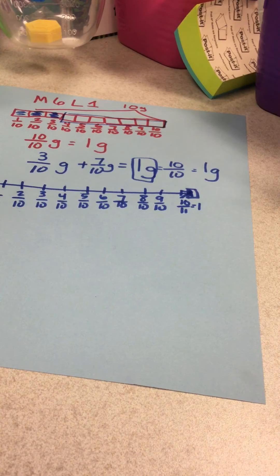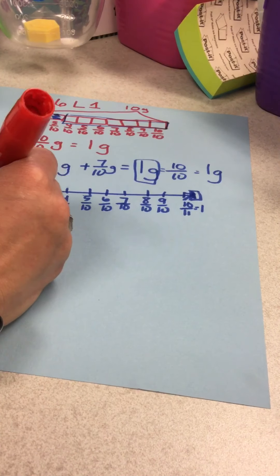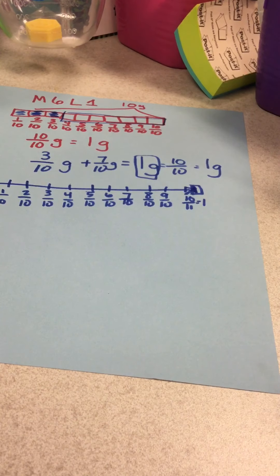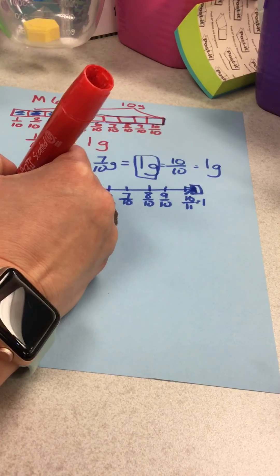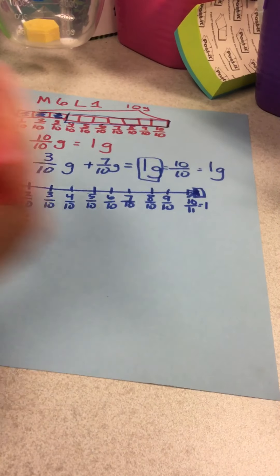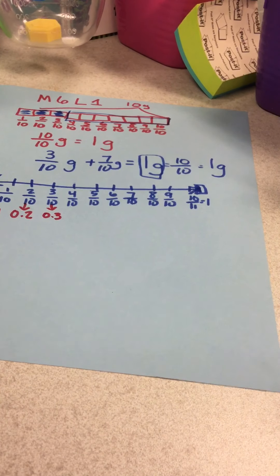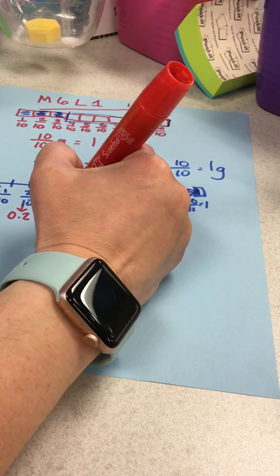So if one tenth is zero point one, what's two tenths? If you say zero point two, you're correct. Then what would be three tenths? Zero point three. Starting to get it? Four tenths would be zero point four. Five tenths, zero point five.